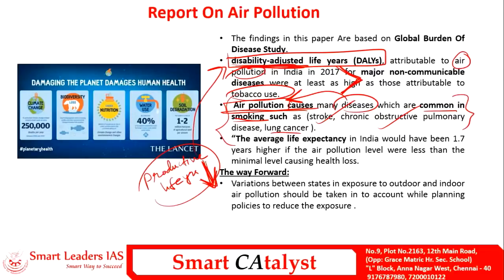If the average life expectancy of a person in India is say 60 years, because of air pollution it is now getting reduced by 1.7 years, making it nearly 58.3 years only. We have to take care and implement measures to reduce air pollution at a very speedy level.